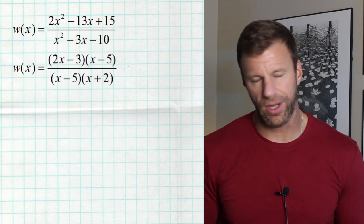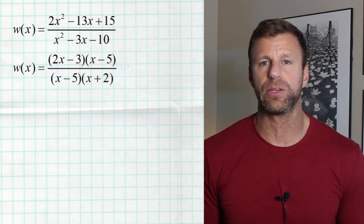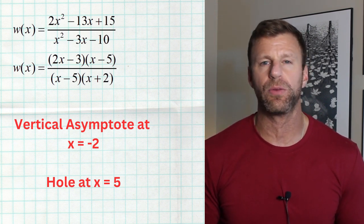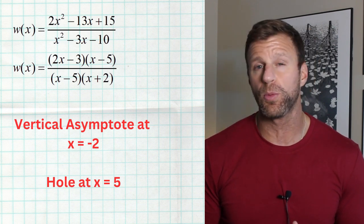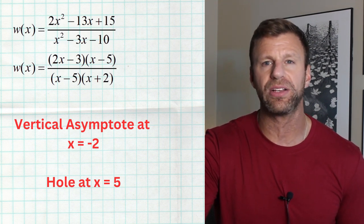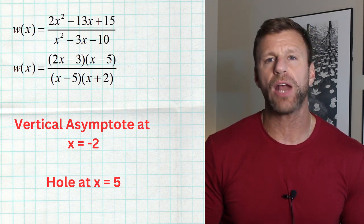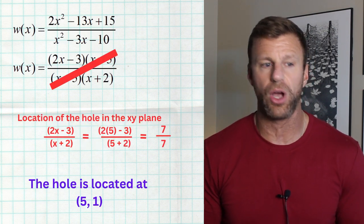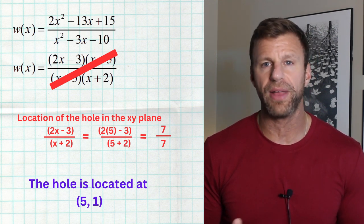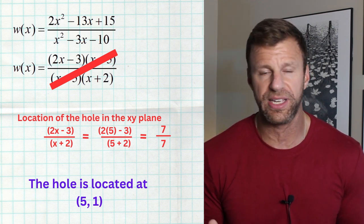In the next example, factored form makes it easier to see everything. We first see a vertical asymptote at x equals negative two, because it makes only the denominator zero. Then we see a hole at five, because x minus five is a shared factor between the numerator and denominator with equal multiplicity of one. To find the location of that hole, we cross out the shared factor x minus five and plug in five to what's left over: two times five minus three equals seven in the numerator, and five plus two equals seven in the denominator. Seven divided by seven is one. So the hole is located at (5, 1).